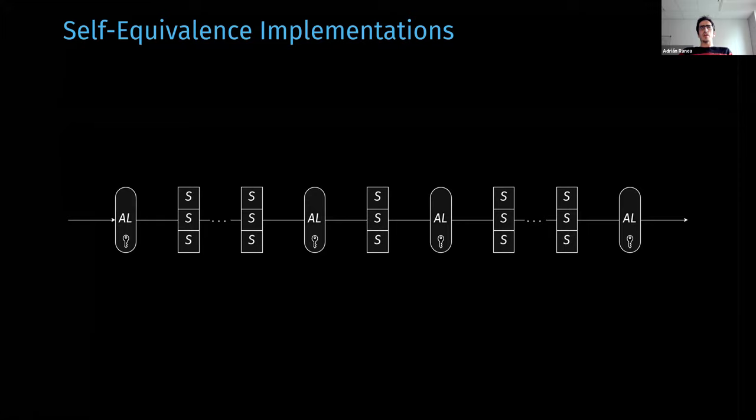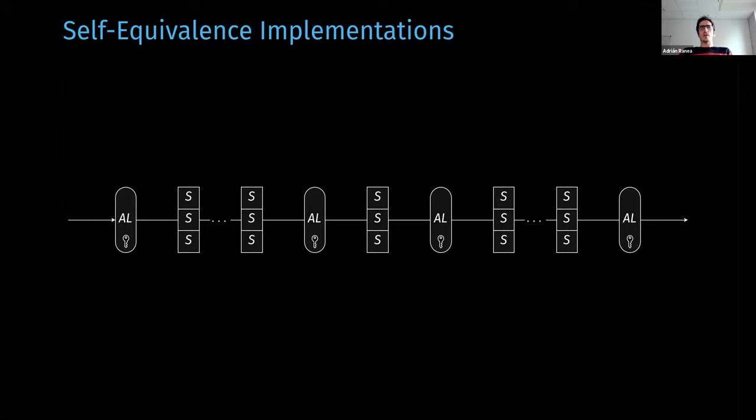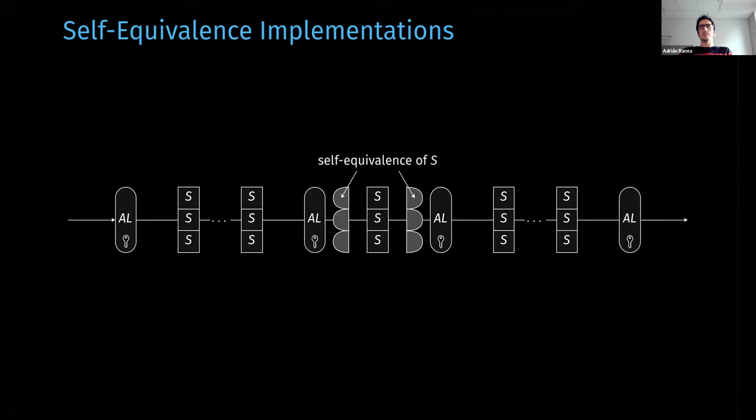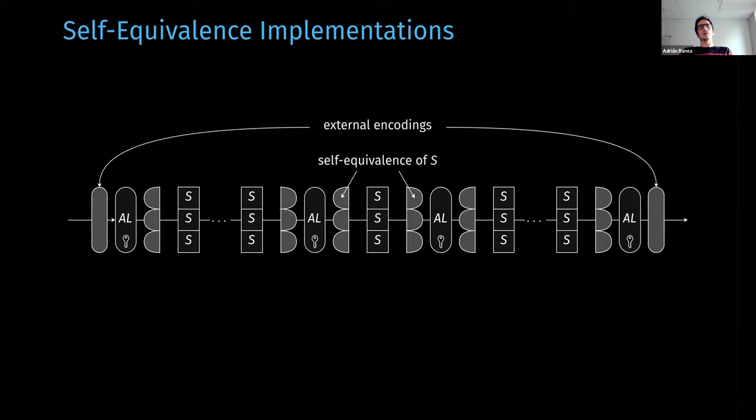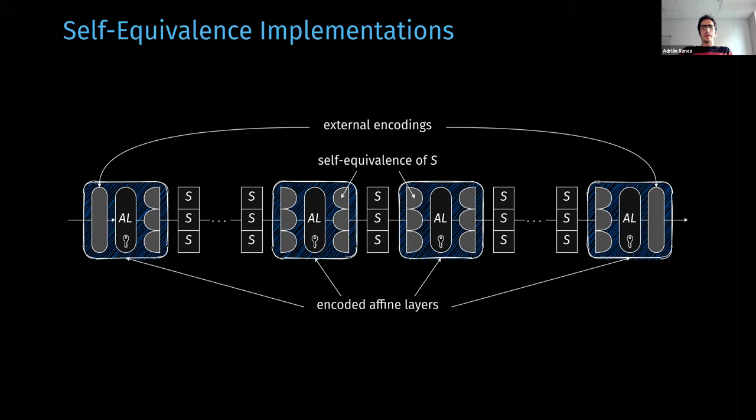When one considers self-equivalence encodings, there is a more efficient, simpler way to derive a white-box implementation that we formalize here as self-equivalence implementation. The idea is as follows: we first decompose the cipher into rounds, and then the round into the S-box layer and the affine layer. In every round we introduce a random self-equivalence of the S-box layer. This doesn't change the input or output behavior. We do this for every round, but the first and the last encoding are chosen to be random affine permutations. They are not cancelled and are needed for security. In this case, the key material is hidden in the encoded affine layers given by the affine layers and the wrong encoding, and they are implemented as a single affine permutation.